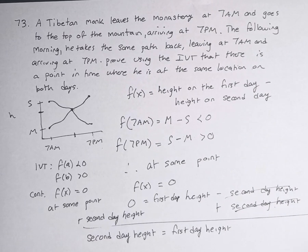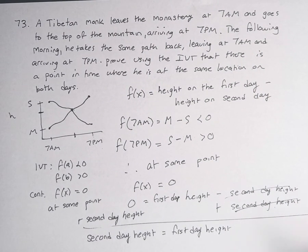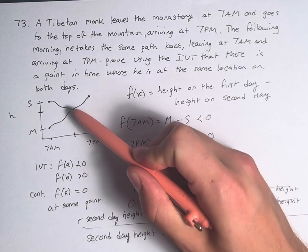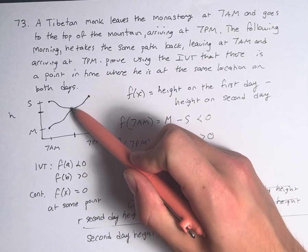Therefore, using the Intermediate Value Theorem, we can say that if a monk is going up a mountain on one day and down a mountain on the other day, over the same time period, at some point on both days, he is at the same location on the mountain at the same time.